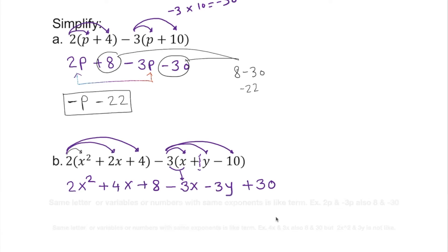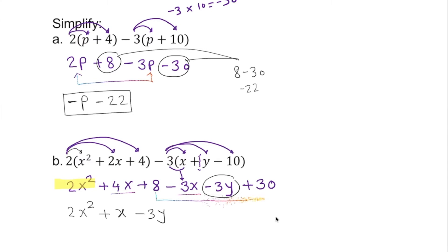Now we have to simplify all the way and look for like terms. The x squared term is alone, so we bring it down as 2x squared. Then we have 4x and 3x — combining gives us plus x. The y term is by itself, so we write negative 3y. For the numbers: 8 plus 30 is 38. Since there are no more like terms, the final answer is 2x squared plus x minus 3y plus 38. That's how we simplify all the way.